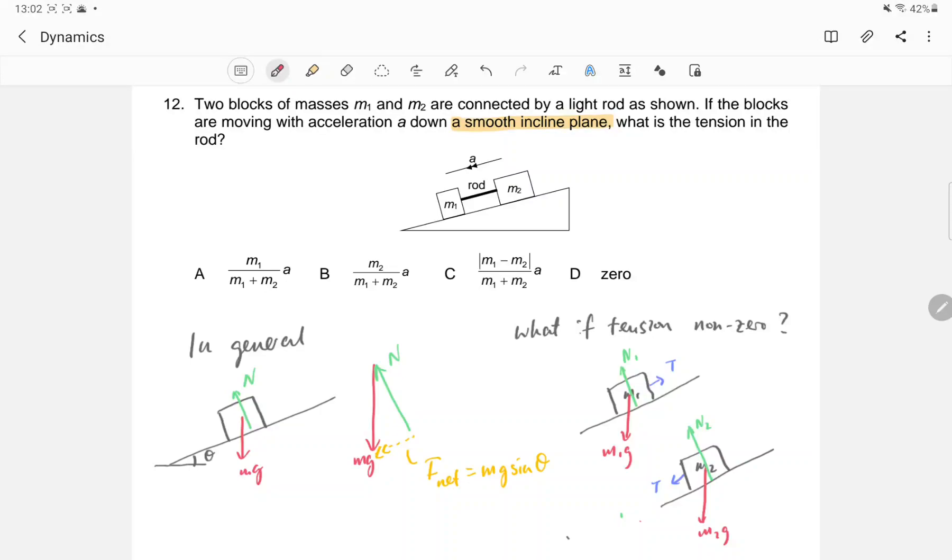Question 12. You have two masses on an inclined slope attached to each other by a rod. So what would be the tension inside the rod?